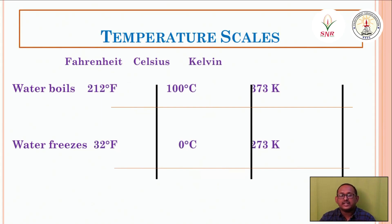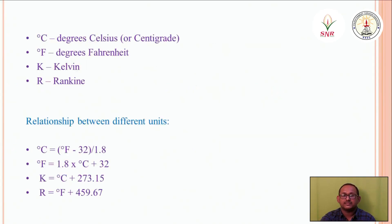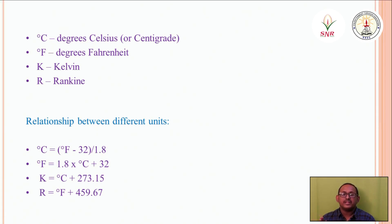The differences between the three scales — Fahrenheit, Celsius, and Kelvin — can be expressed using conversion formulas. To convert Fahrenheit to Celsius: °C = (°F − 32) / 1.8. To convert Celsius to Fahrenheit: °F = 1.8 × °C + 32. To convert Celsius to Kelvin: K = °C + 273.